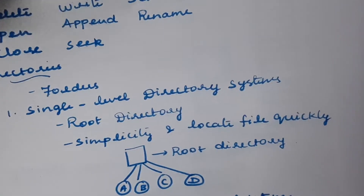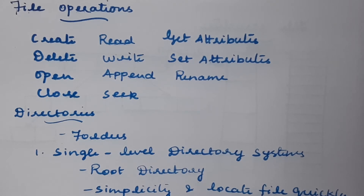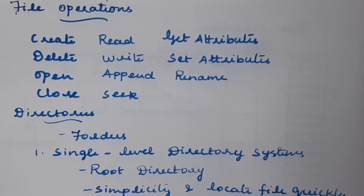Next, we will discuss file operations. The familiar operations that we can perform on files are: create, delete, open, close, read, write, append, seek, get attribute, set attribute, and rename. These are all operations we can perform with their corresponding system calls, as part of managing the file system in an operating system.